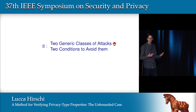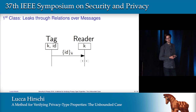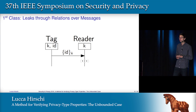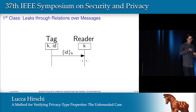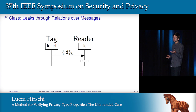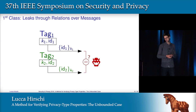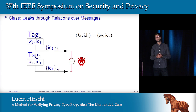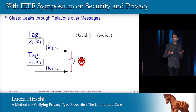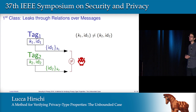Now I'd like to show you two generic classes of attacks and two conditions to avoid them. The first class is when there are leaks through relations of output messages. The first example is very naive: we consider a tag and a reader sharing a symmetric key K, and the tag is willing to authenticate itself to the reader by sending its identity encrypted with key K. Because there is no freshness in this message, there is an attack — this protocol is linkable. The attacker just has to eavesdrop the output message of the tag and then perform an equality test over the two messages from two sessions. If those two sessions were performed by the same tag, the attacker observes an equality; otherwise it will observe an inequality. So very easily, it just has to eavesdrop to trace a tag.